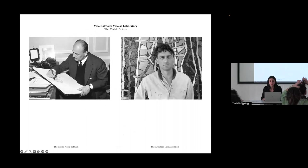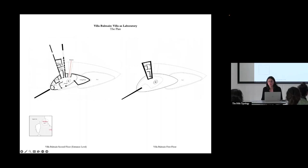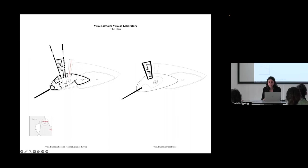Villa Balmain was the product of a number of social and economic factors. The two visible actors were the client, Pierre Balmain, head of a fashion house in Paris, and the architect Leonardo Ricci, who was 40 when he designed the villa. They met almost by chance because the client needed an Italian architect to build his holiday residence in Elba. When looking at the plan, one is confronted with a sense of disorientation — the house is developed on different levels in a top-down type of plan, with an elliptical staircase guiding you through living room, dining room, bedrooms, kitchen, and bathroom, descending down to the pool.